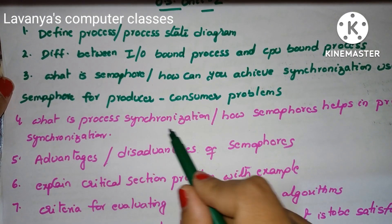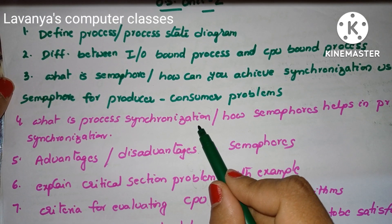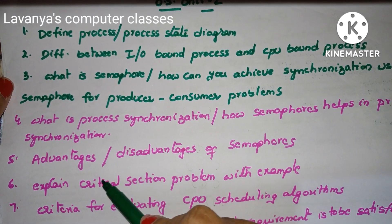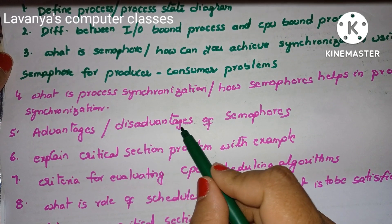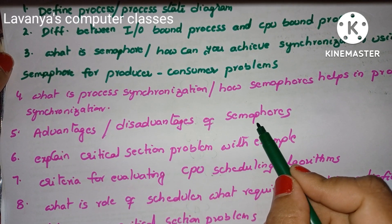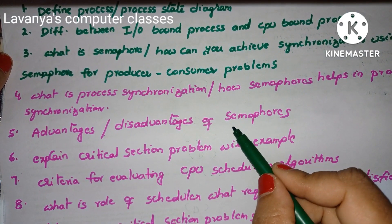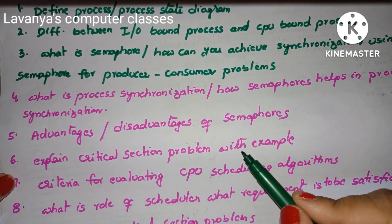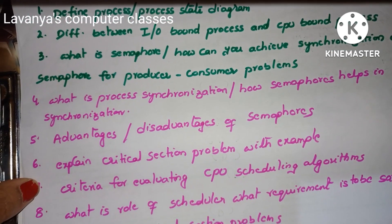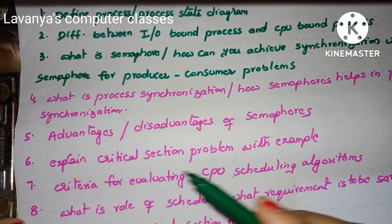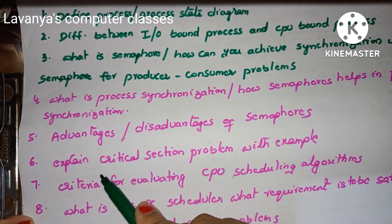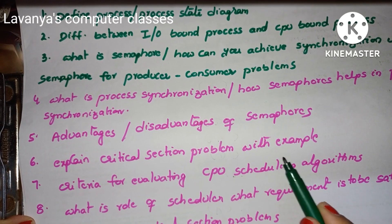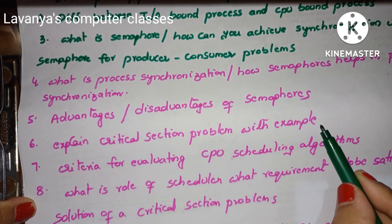Next one is what is process synchronization and how semaphore helps in process synchronization. Explain the advantages and disadvantages of semaphore — that means everything is the semaphore concept. Read all the semaphore concepts so that if a question is asked in any way, we are ready to attempt it. Next one is explain critical section problem with example — also a very important question.